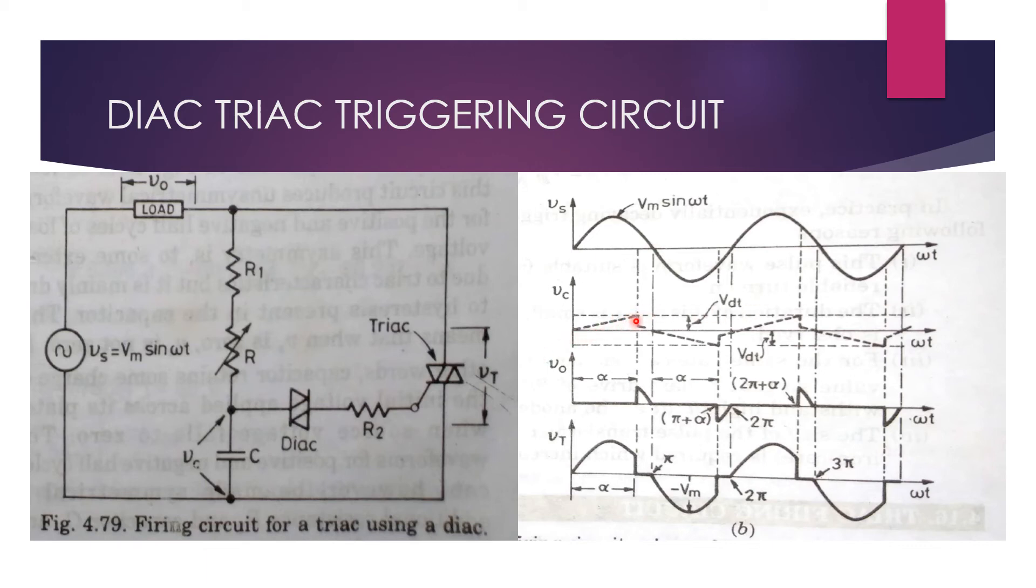When capacitor charges to DIAC trigger voltage VdT, the DIAC turns on and hence the capacitor discharges through the DIAC R2 and gate of the TRIAC. Therefore, TRIAC turns on and source voltage appears across the load as shown in the waveform. Thyristor acts like a closed switch so voltage across thyristor is 0.